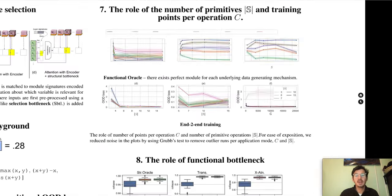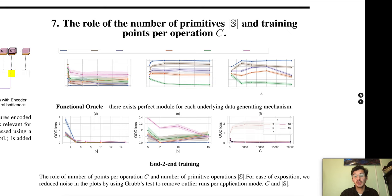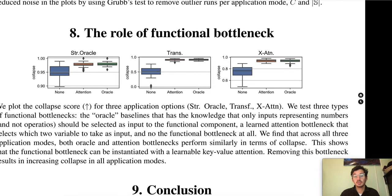Additionally, we investigate how the number of underlying primitives — which is the number of mathematical operations in this case — as well as the number of samples per task, can affect the systematic generalization ability. We also look in more detail at the role of the functional bottleneck. For more details on these experiments as well as more technical details, please come to our poster during the conference.